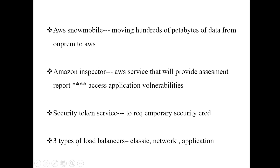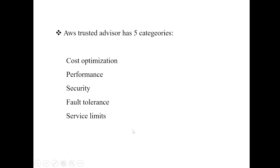There are three types of load balancers in AWS: Classic, Network, and Application. Some questions will give five or six options and ask you to select which ones are load balancers. AWS Trusted Advisor has five categories: cost optimization, performance, security, fault tolerance, and service limits.